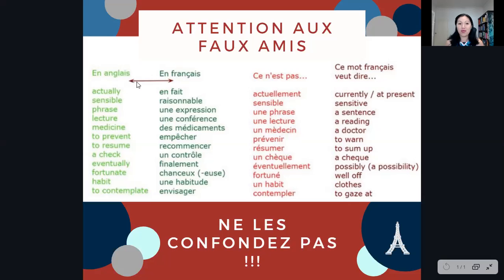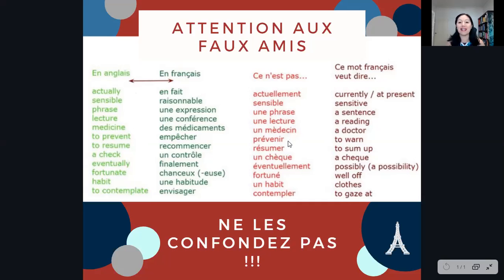En anglais, the verb 'to prevent' is not 'prévenir.' 'Prévenir' en français means 'to warn.' For example: Il faut prévenir la police — we have to warn the police. To say 'to prevent,' we use the verb 'empêcher.'